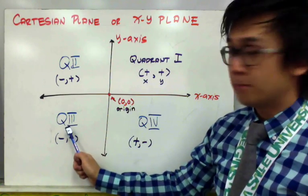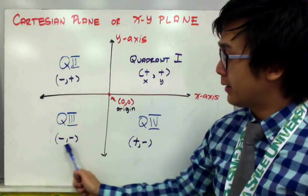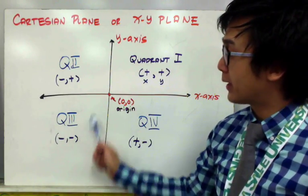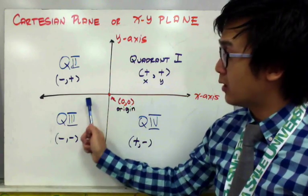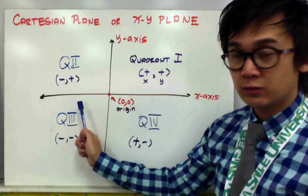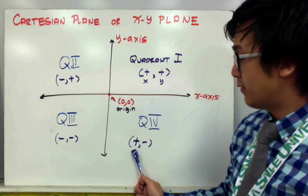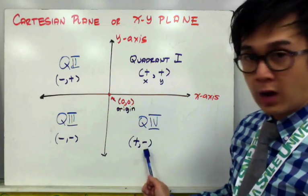And for our quadrant 3, both x and y will be negative. All the points that will be in this particular quadrant right here will have a negative x and a negative y value. And for our last quadrant, we have a positive value for x and a negative value for y.